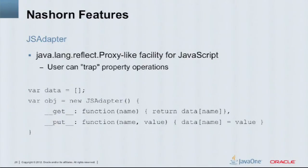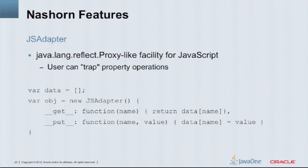Similarly, with the JAdapter: the JAdapter is an object where you can define how you deal with gets and sets. If you create a JAdapter object and a property doesn't exist, you can get it to look up that property in a database or look for the value on the network — you can adapt it to do whatever you want.